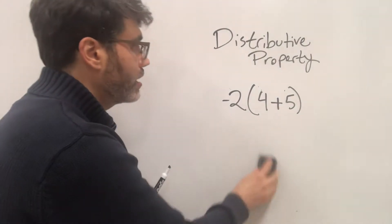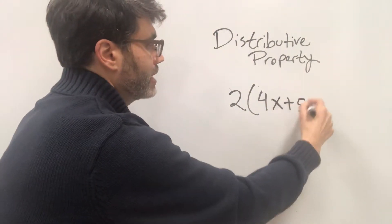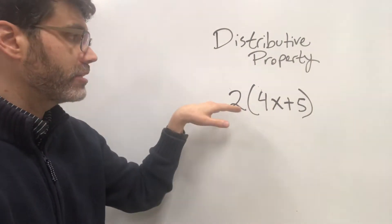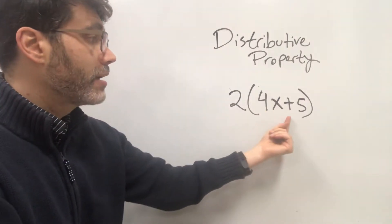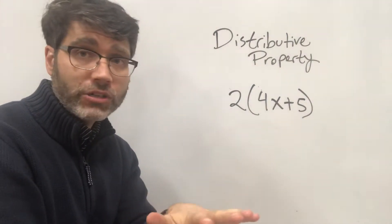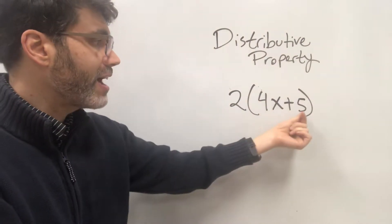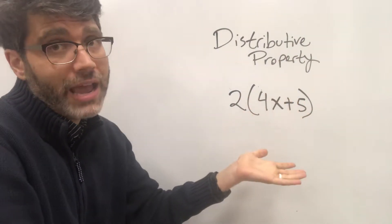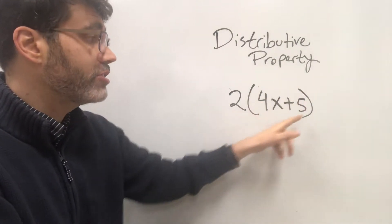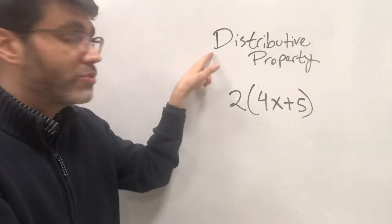What if we had some variables? What if we had 4x plus 5 inside the parentheses, and then 2 multiplying the entire parentheses? Notice that 4x and 5 are not like terms — they are unlike terms, so you cannot combine them. Remember, 4 and 5 by themselves are constants and you can add constants together. But since 4 is attached to the x through multiplication, this is as far as you can go.